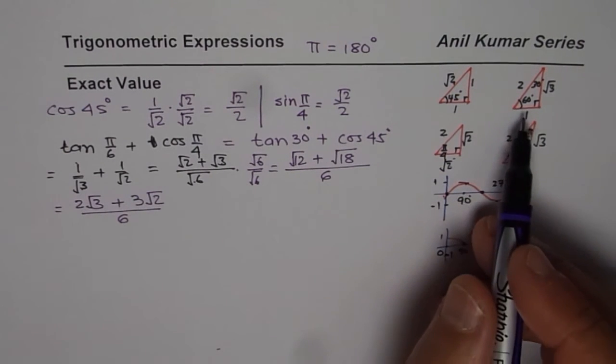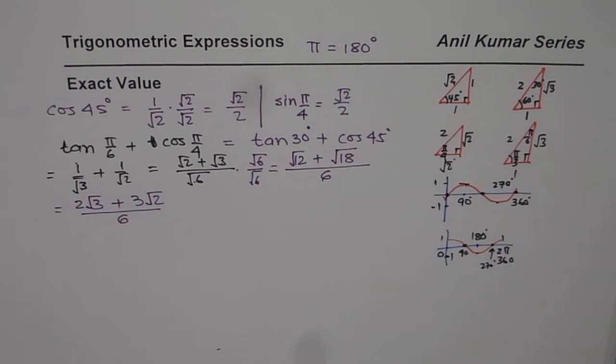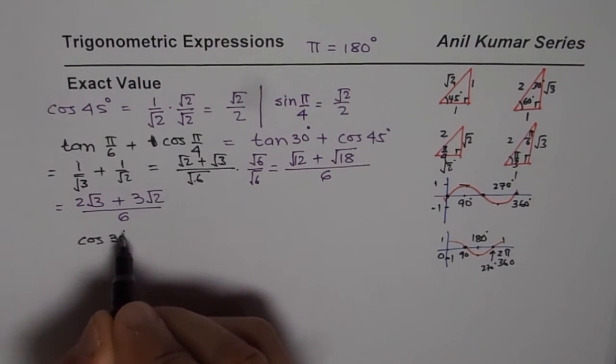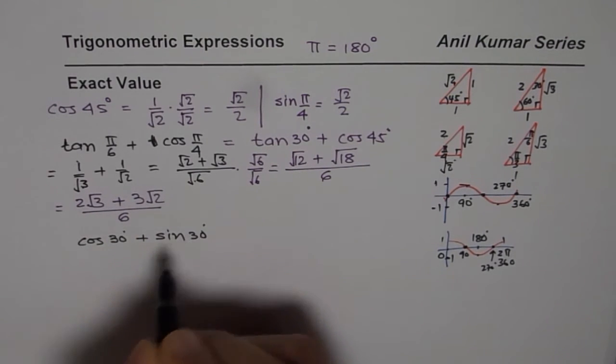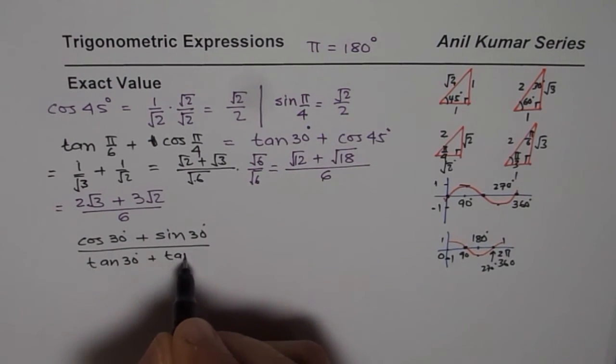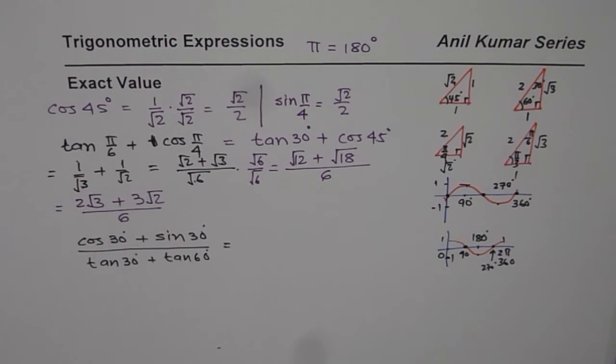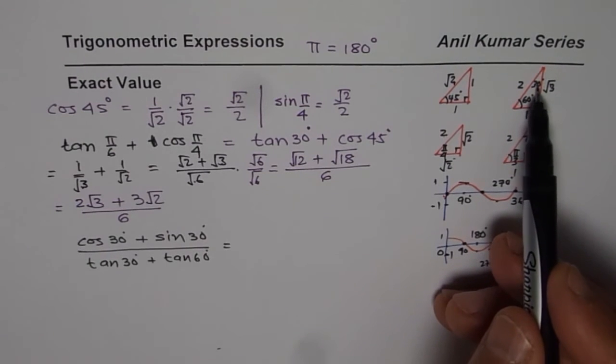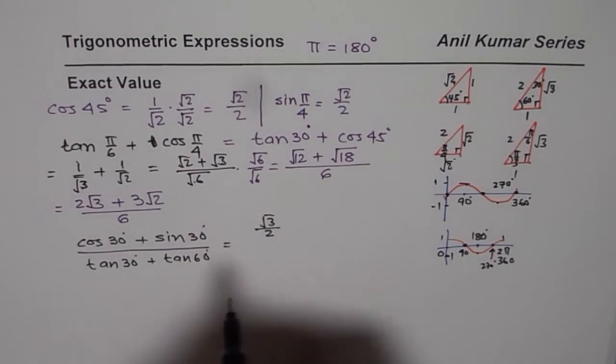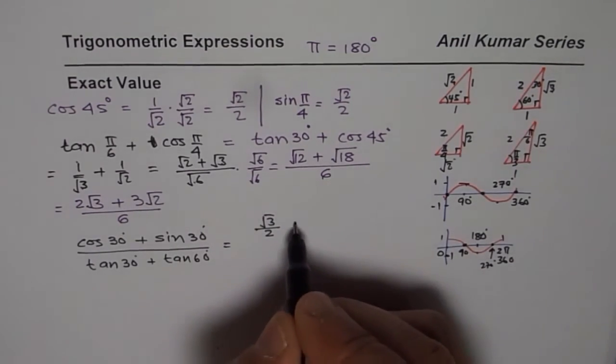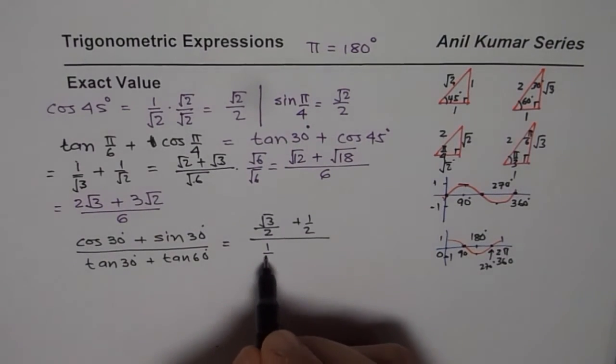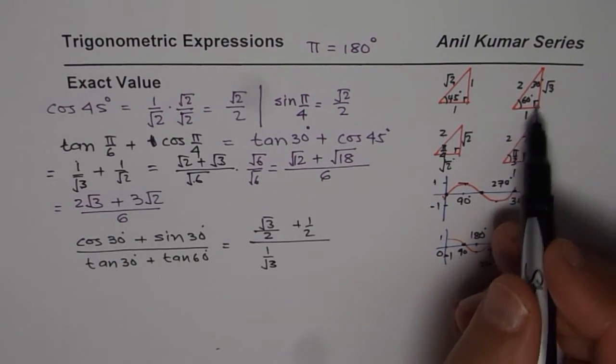Now, let us take some more examples. And this time what we will do is, we'll get into a more complicated case. And let me take a case like cos of 30 degrees plus sine of 30 degrees divided by tan of 30 degrees plus tan of 60 degrees. In that case, what happens? When I say cos of 30 degrees, then 30 degrees. Cos is square root 3 over 2.